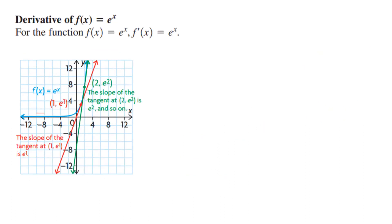When we take the derivative of e to the power of x, we realize the derivative is actually the same. We can prove this by the graph y equals eˣ. When we put x as one, the corresponding y shows a value of e to the power of one. Same thing if we plug in two for the x value, we get e to the power of two for y, and so on.